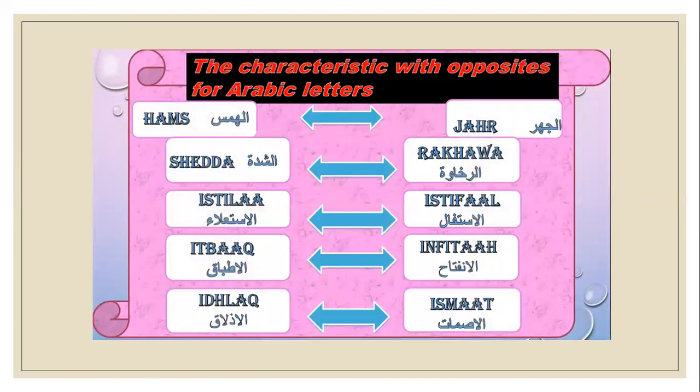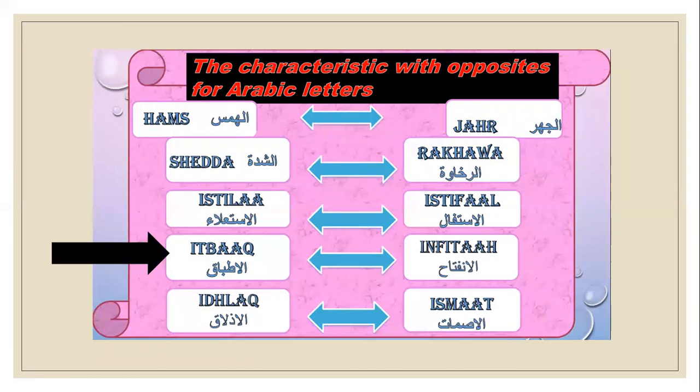We already studied together the first two characteristics with opposites: Hamz, opposite with Jah; Shiddah, opposite with Rakhawa; and Istala, opposite with Istifal. We studied three characteristics with opposites. Today, insha'Allah, we will study the fourth characteristic with opposite. It's Idbaq, opposite with Infitah.